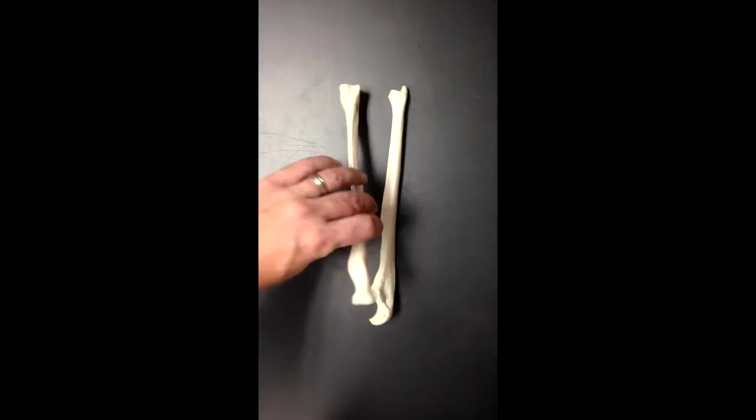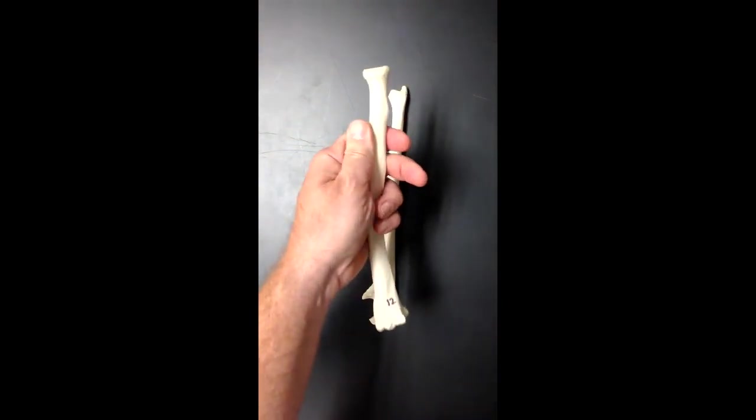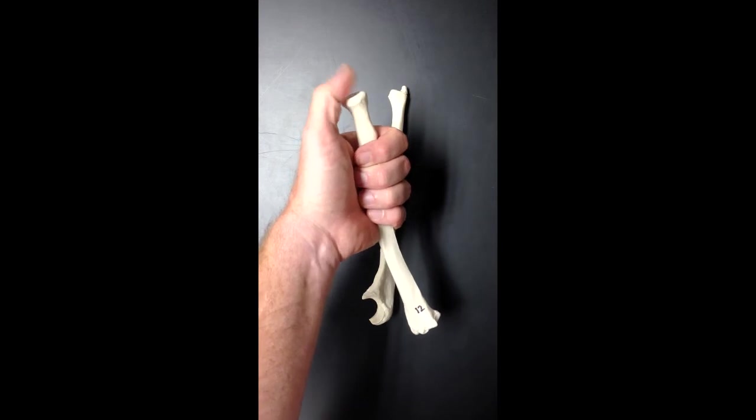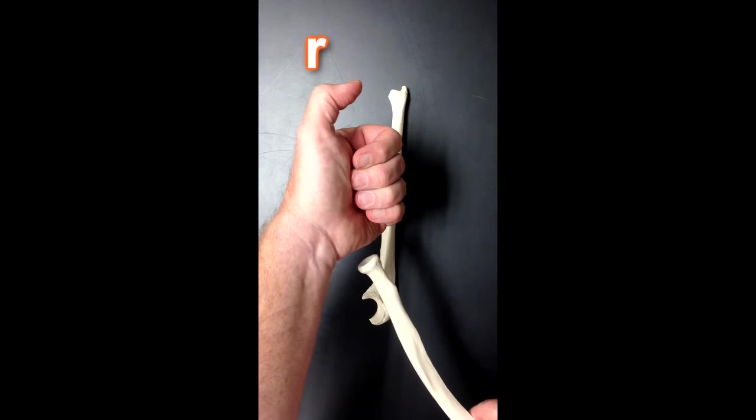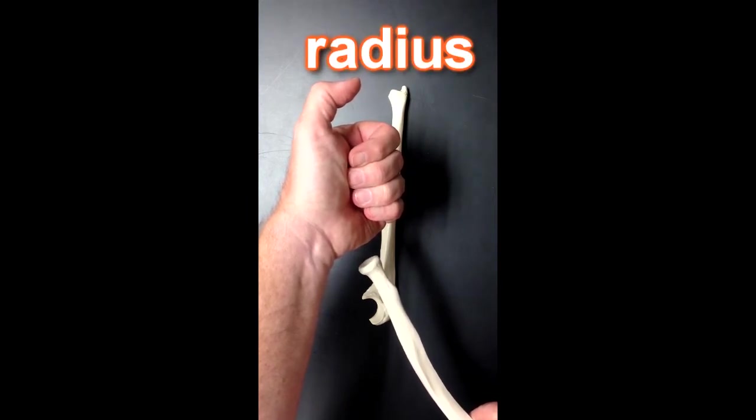So the radius, if I were to hold the radius like this with the head and my thumb on that little push button, you can see that it makes an R for radius. The thumb makes an R for radius.